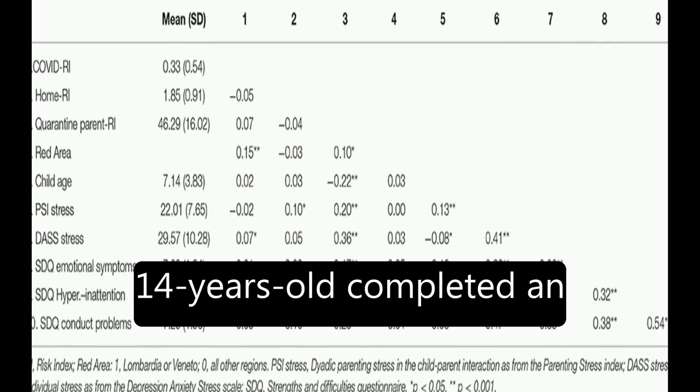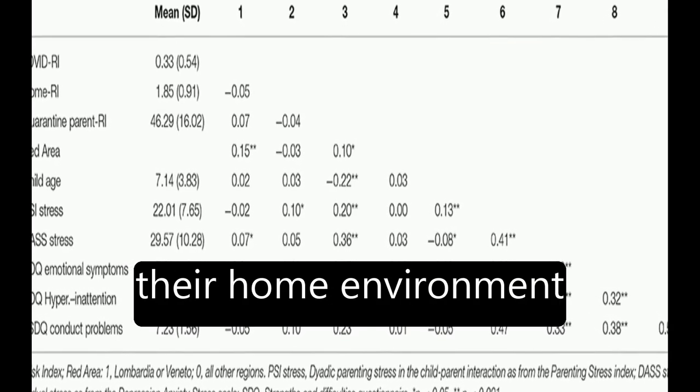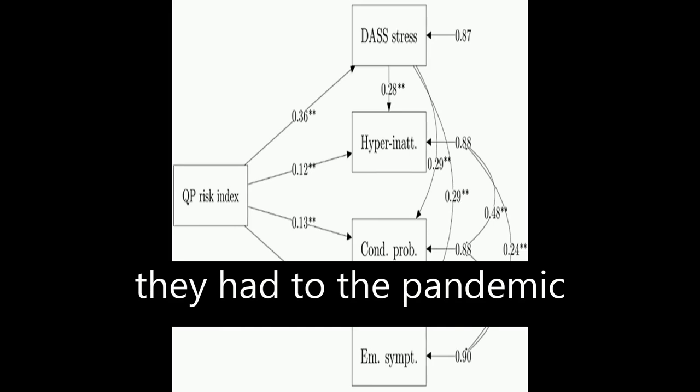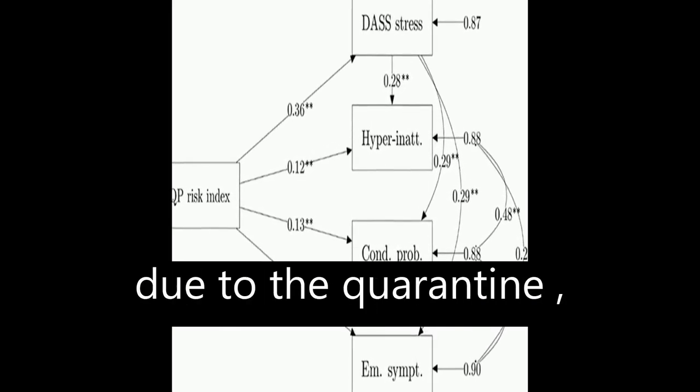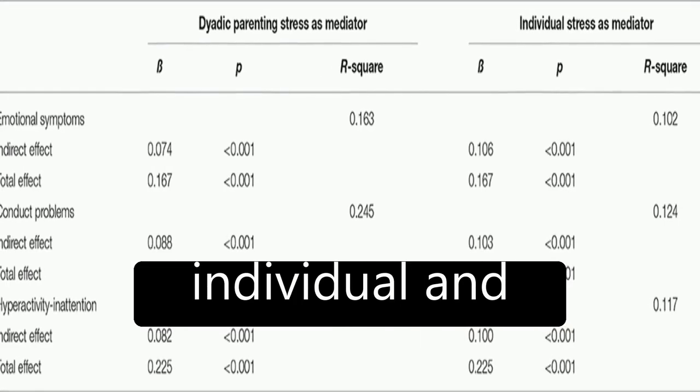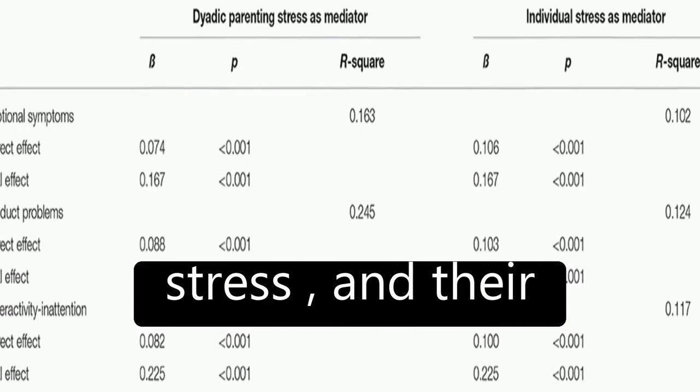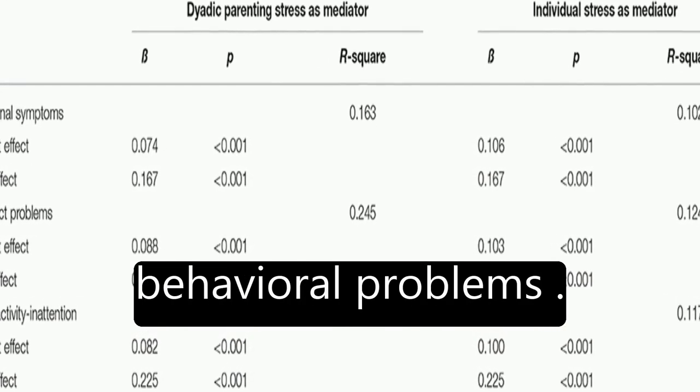Parents of children aged between 2 and 14 years old completed an online survey reporting their home environment conditions, any relation they had to the pandemic consequences, their difficulties experienced due to the quarantine, their perception of individual and parent-child dyadic stress, and their children's emotional and behavioral problems.